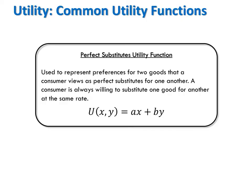The first is the case of a perfect substitutes utility function. These utility functions are used to represent preferences for two goods that a consumer views as perfect substitutes for another. All perfect substitute utility functions will take the form U equals some positive constant a times good x plus some positive constant b times good y.